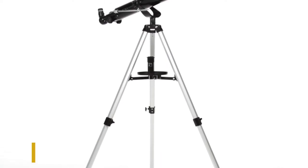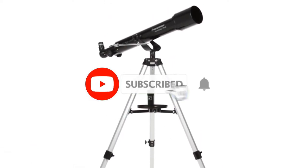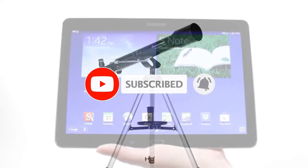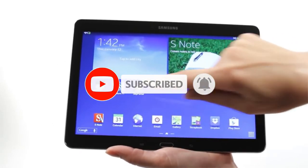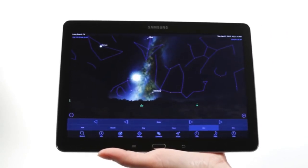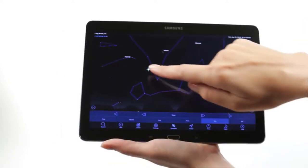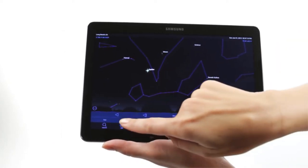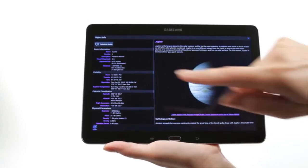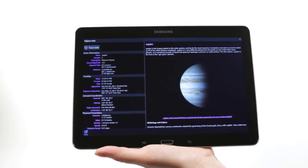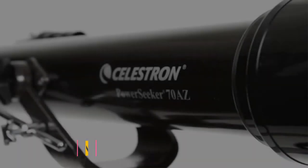The PowerSeeker series is designed to give the first-time telescope user the perfect combination of quality, value, features, and power. This telescope for adults and kids to be used together is compact, lightweight, and portable. Take the telescope to your favorite campsite or dark sky observing site, or simply the backyard.